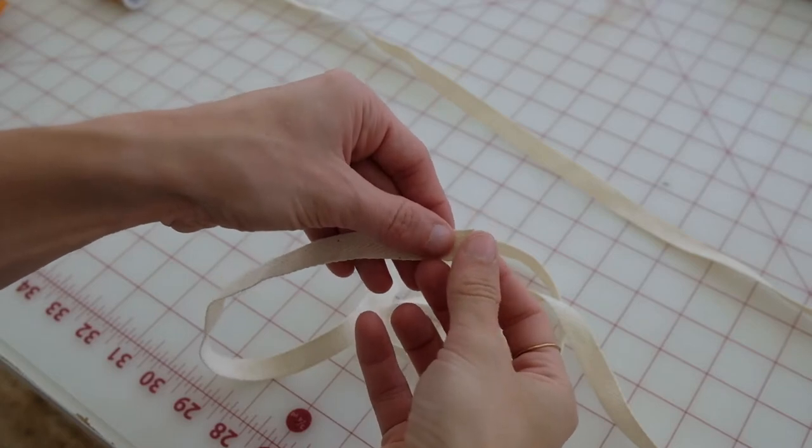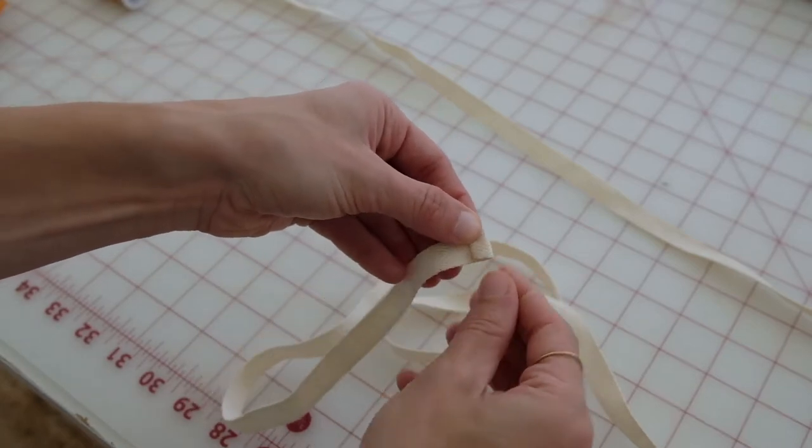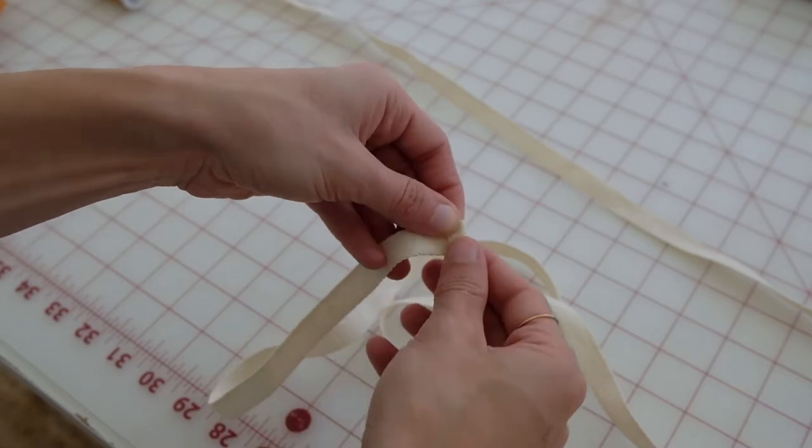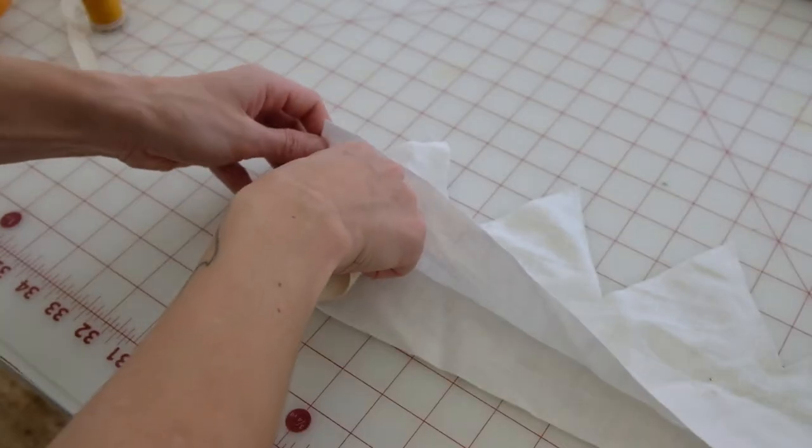Cut two pieces of twill tape that measure 12 inches. Double over the ends of the twill tape and then sew across. Then you're going to sandwich the tape in between the two layers of your crown.